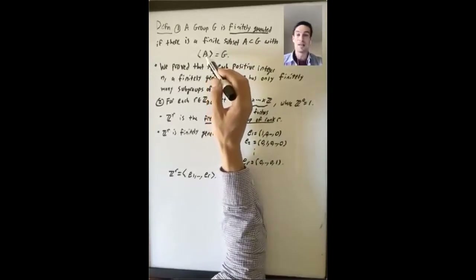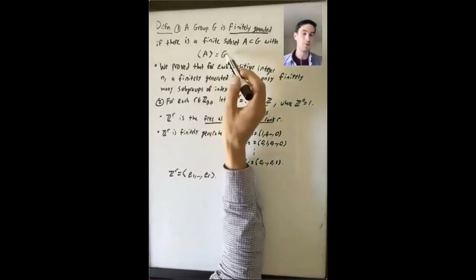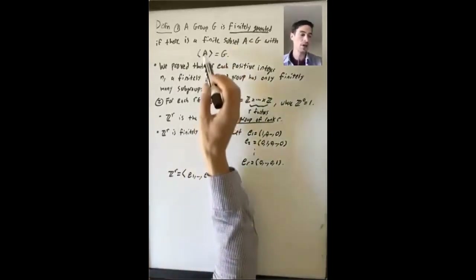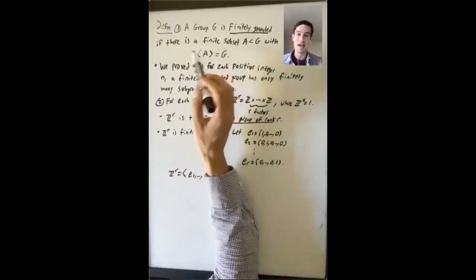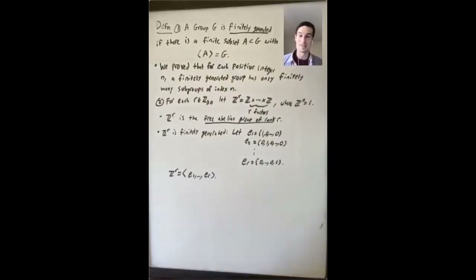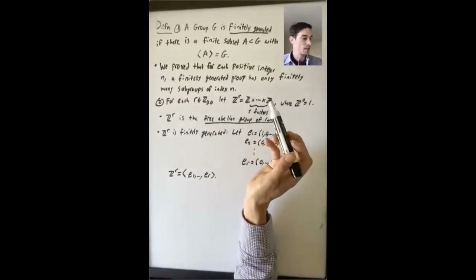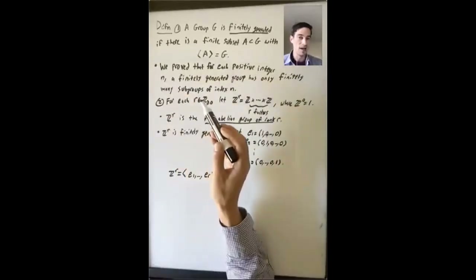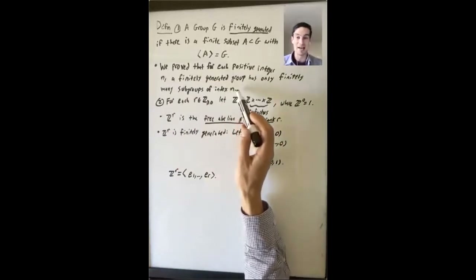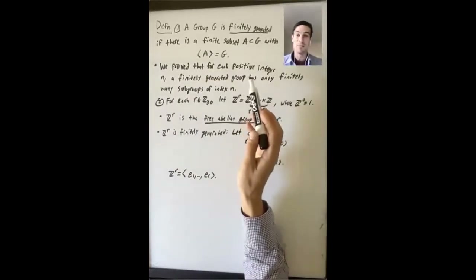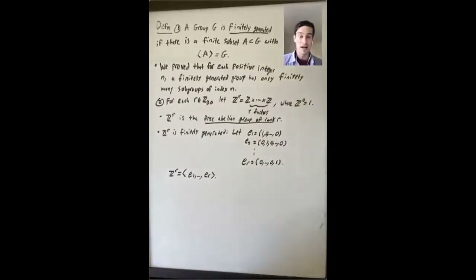What does this mean? We saw it in two different ways. One, it's the smallest subgroup of G containing A as a subset. But another way to say it is you take the elements of A and their inverses, and you take all of the words in G written in those elements. One thing we proved when we were talking about group actions was that for every positive integer N, a finitely generated group has only finitely many subgroups of index N, even though a finitely generated group may have infinitely many subgroups. For any particular value of N, it only has finitely many subgroups of index N.